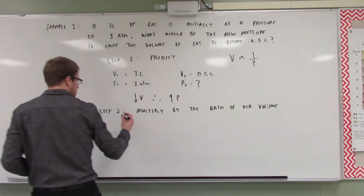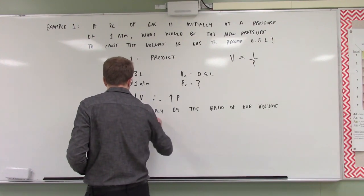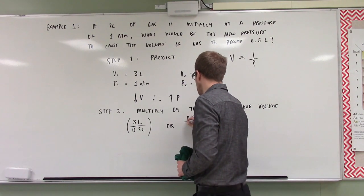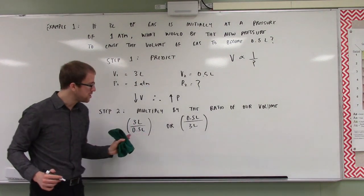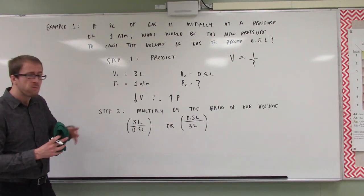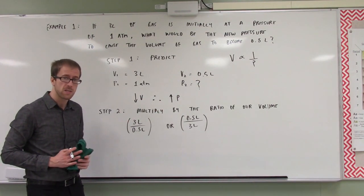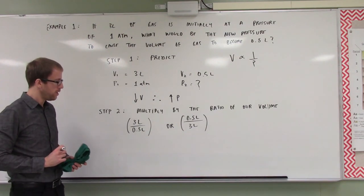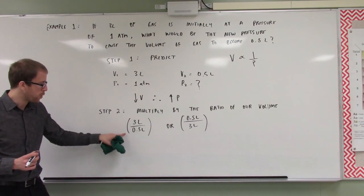We have two options for multiplying by a ratio: three liters over 0.5 liters, or 0.5 liters over three liters. When determining which ratio to use, keep in mind our prediction — our pressure should increase. Which of these two is going to increase our pressure? Clearly it's going to be three over 0.5.